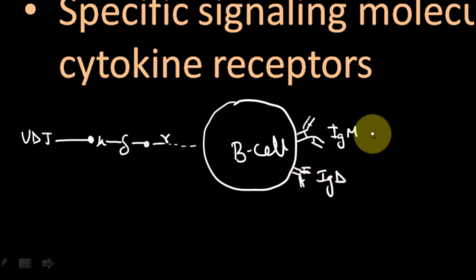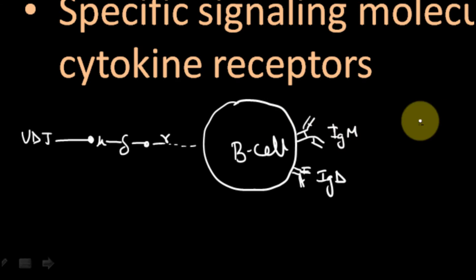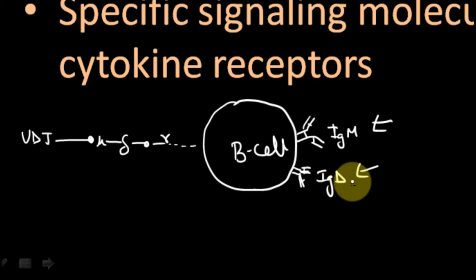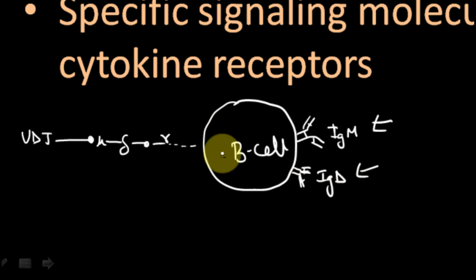Normally, a naive mature B cell produces IgM and IgD antibodies by default. No activation or class switching is happening — they are just by default producing IgM and IgD. Why they produce IgD and IgM will be covered in the next slide.